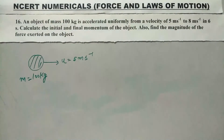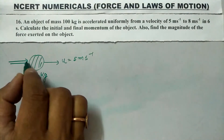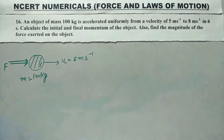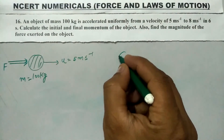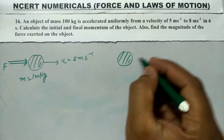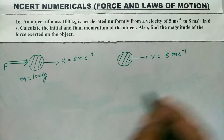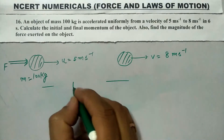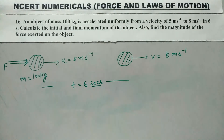अगर इसके ऊपर एक force लगती है, तो यह 8 meter per second की velocity से चलता है। और यहाँ से यहाँ तक T is equal to 6 seconds। (If a force is applied on it, it moves with a velocity of 8 m/s, and the time taken is T = 6 seconds.)